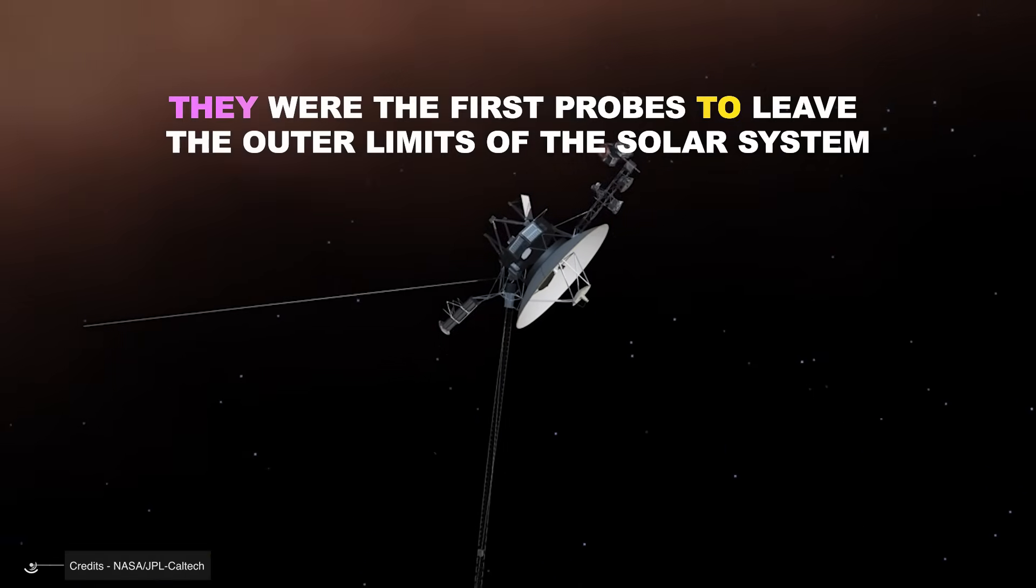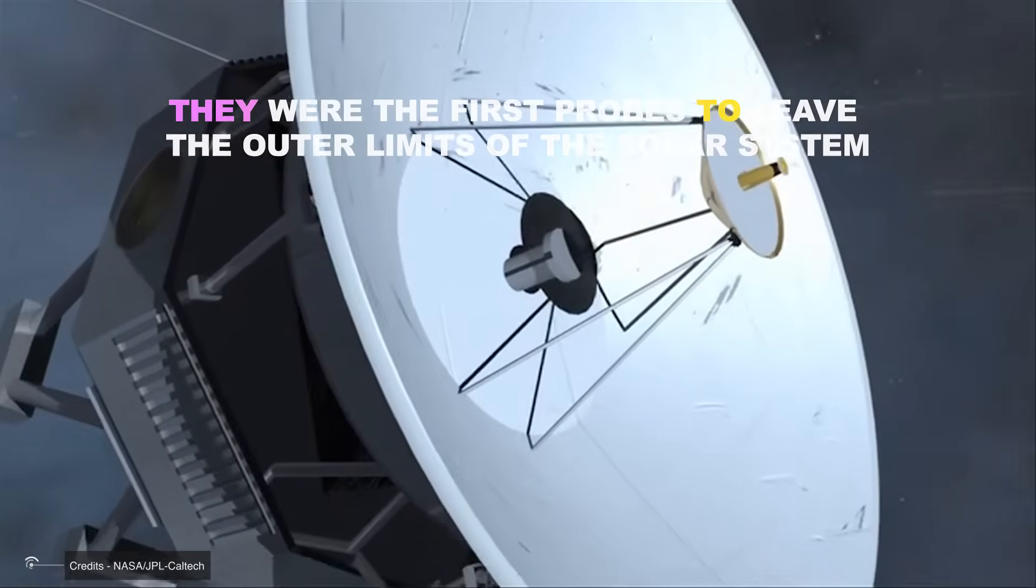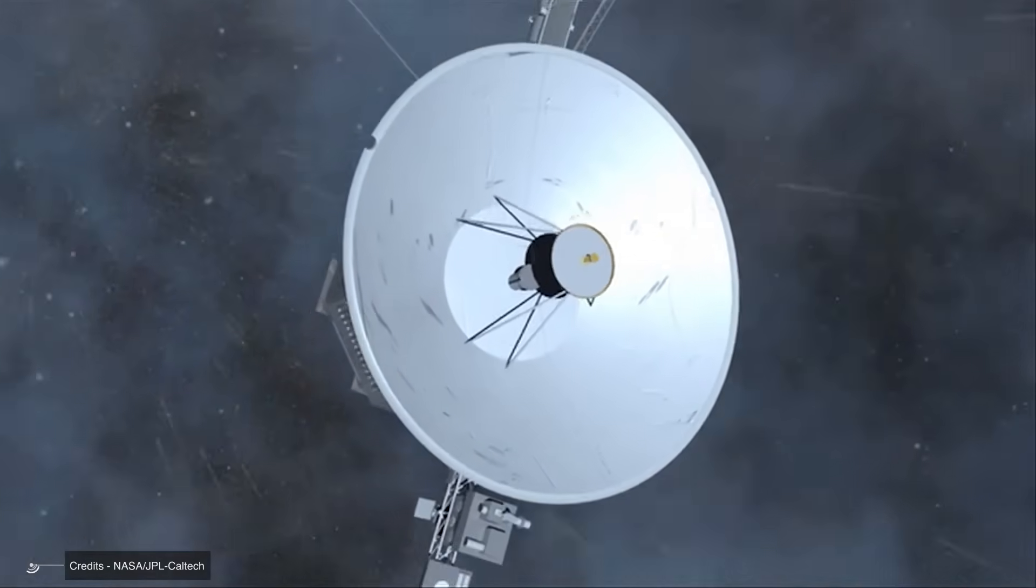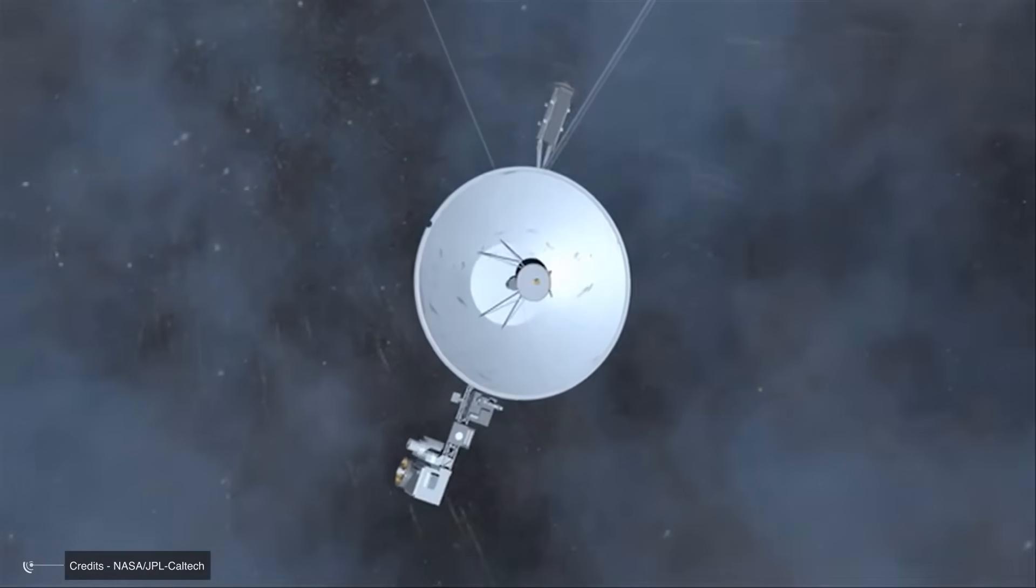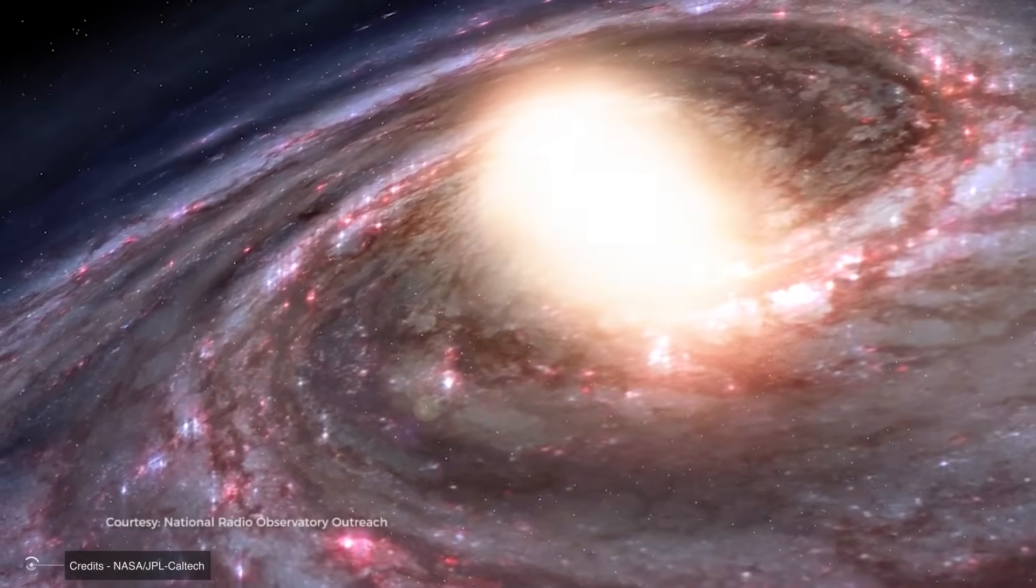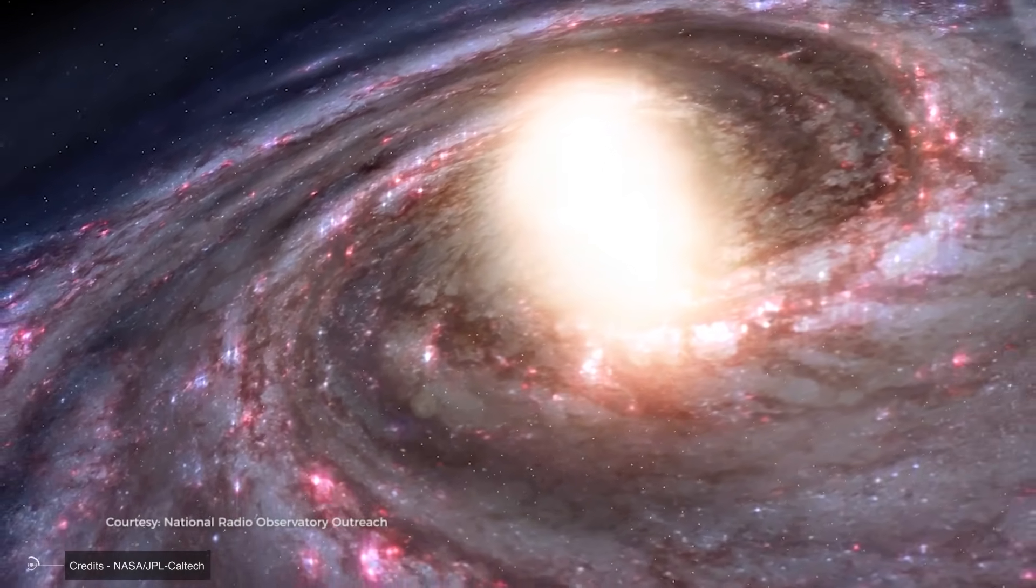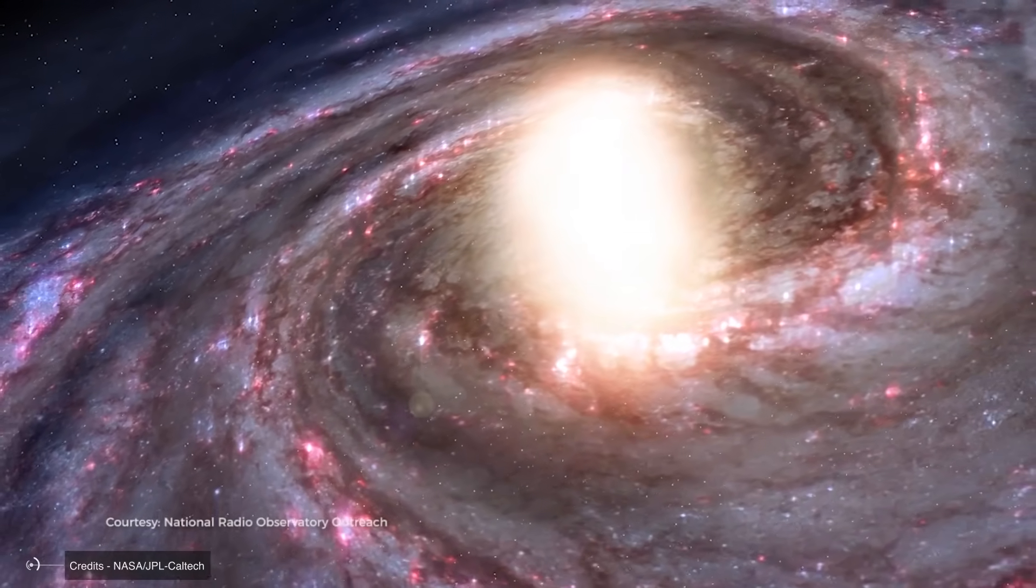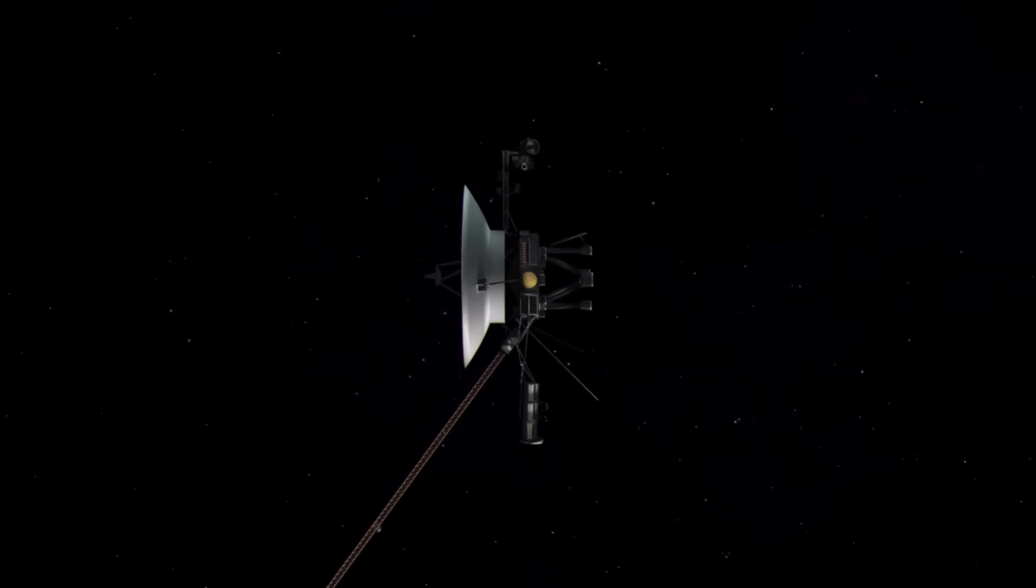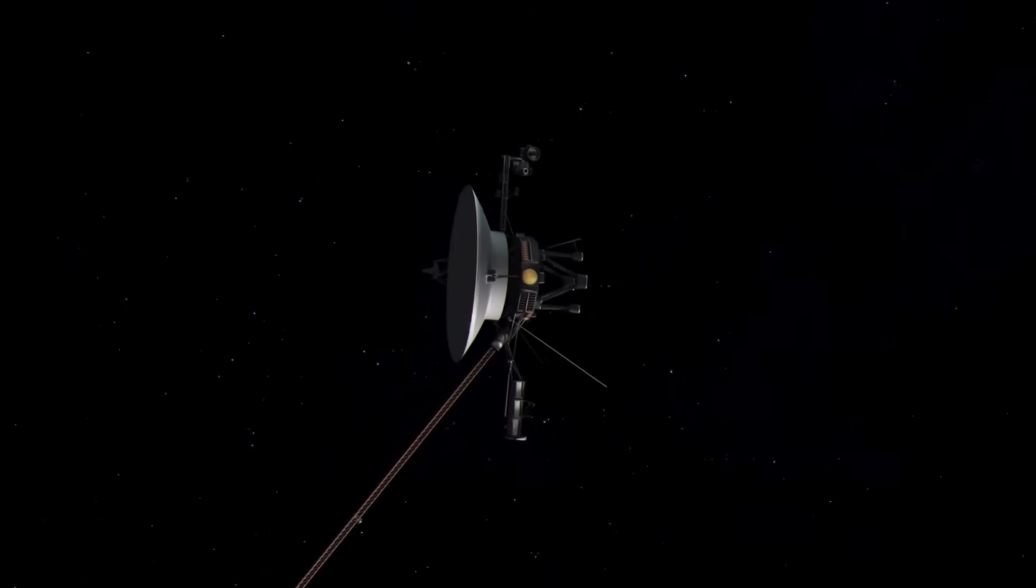They were the first probes to leave the outer limits of the solar system. This is one of the most common misconceptions, and it makes sense that people believe it. After all, the Voyager probes are the most famous, have traveled the farthest, and continue to send back data from the outer reaches of the solar system. But no, they were not the first to cross the boundary of the outer solar system.